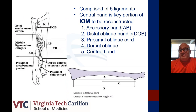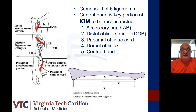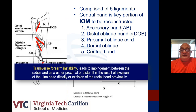The interosseous membrane is comprised of five ligaments. The central band is the key portion to be reconstructed. It's composed of the accessory band, the distal oblique bundle, the proximal oblique cord, the dorsal oblique, and the central band. The central band tends to be the one we reconstruct in a chronic setting of interosseous membrane insufficiency. When the interosseous membrane is compromised or you have involvement of either the distal or proximal radioulnar joint, you can have a form of transverse forearm instability.